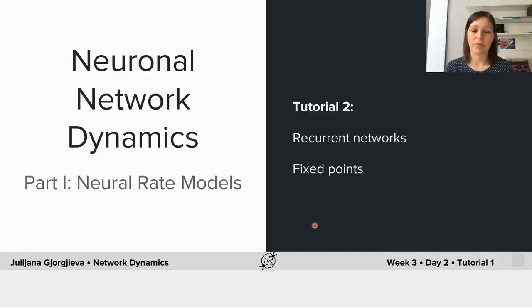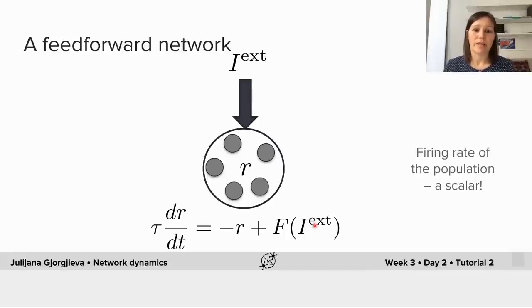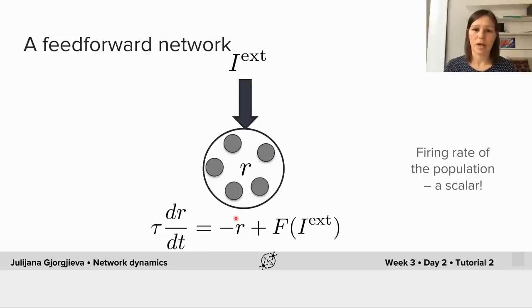Today we're also going to introduce the concept of fixed points or steady states of these networks. As you remember from the first part of the tutorial, we studied a feedforward network modeled with a single scalar variable r denoting the firing rate of a population driven by an external input i_external. The differential equation had two parts: a leak term describing how activity decays in time with a time constant tau, and a second part describing how the population integrates external input through a nonlinear f-I curve denoted f.